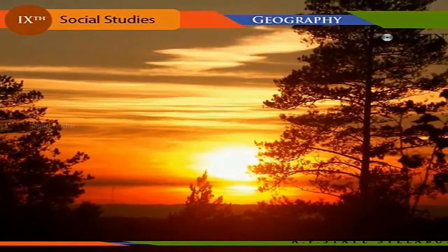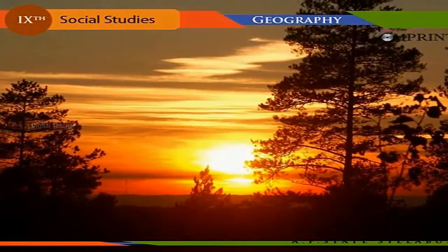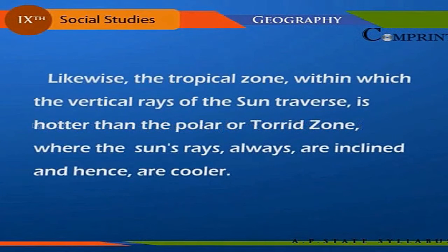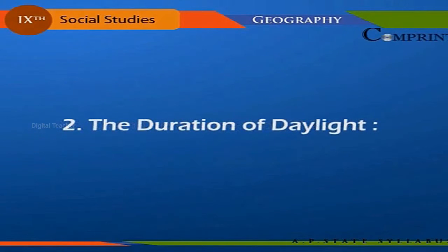During the same day, in the evening when the Sun is low on the horizon, the temperature dwindles because the angle of incidence is low. Likewise, the tropical zone — within which the vertical rays of the Sun traverse — is hotter than the polar zone, where the Sun's rays are always inclined and hence cooler.